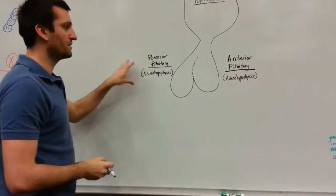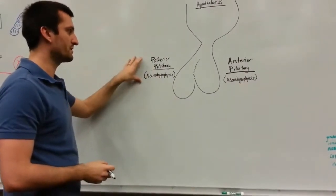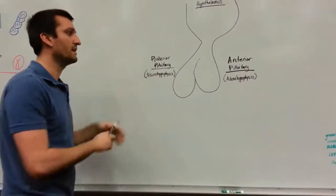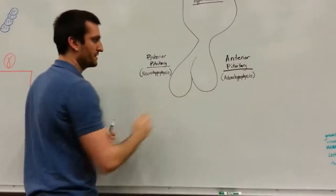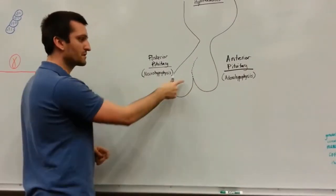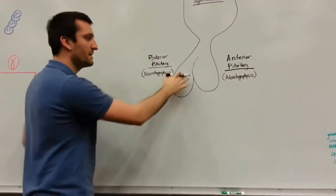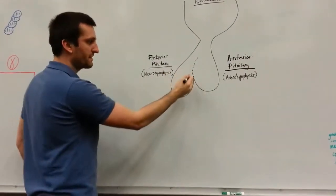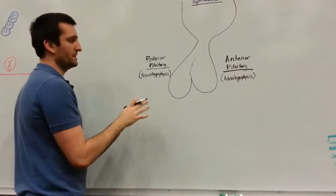As you can see here, I split the pituitary gland into a posterior pituitary and also an anterior pituitary. Those are going to be separated by a line, and this area is going to be called the pars intermedia.